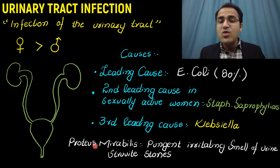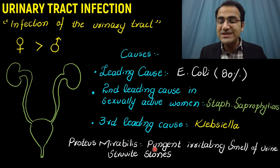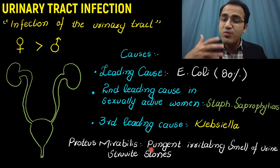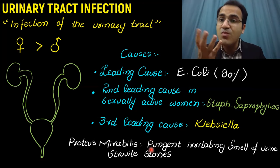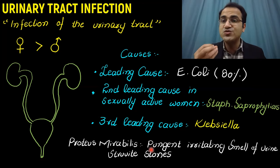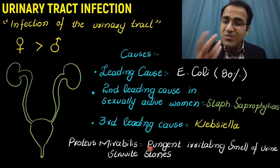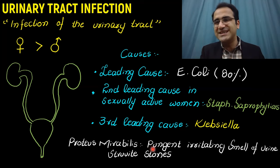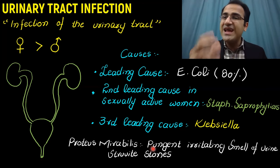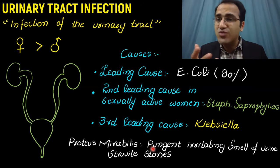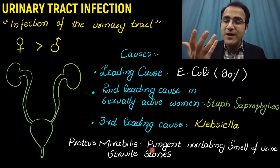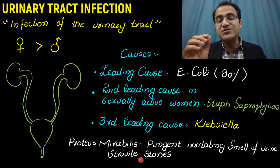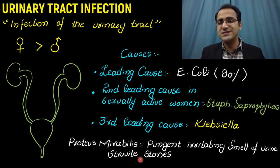Proteus mirabilis is a very important cause of urinary tract infection. It causes a pungent, irritating smell of urine because it produces ammonia — it is urease positive. The urine is alkaline in Proteus mirabilis infections due to ammonia production, and it is also associated with struvite stones in the kidneys.